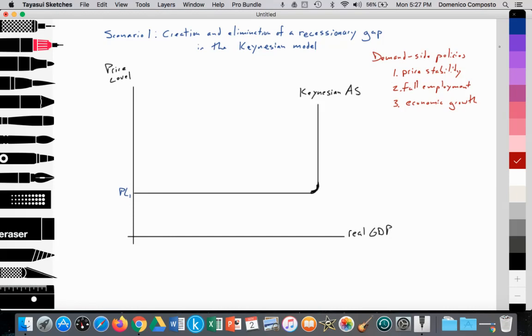All right, so let's begin. So we're going to have, we will assume that Spain was at full potential GDP before the COVID pandemic. So here we're going to have aggregate demand going through section two of the Keynesian aggregate supply curve, and we'll call that AD1.